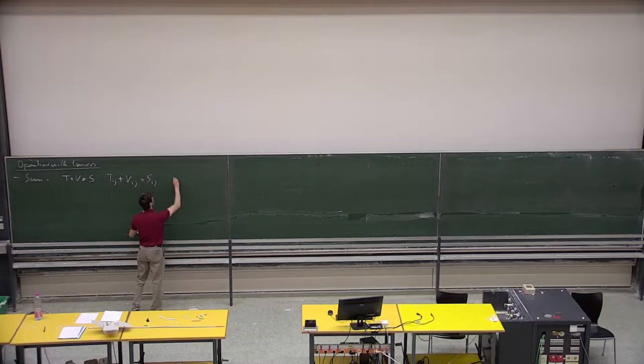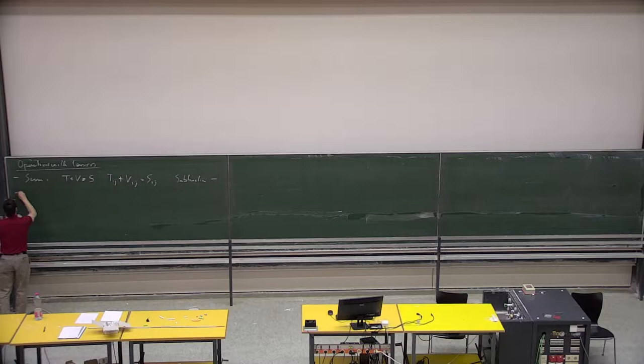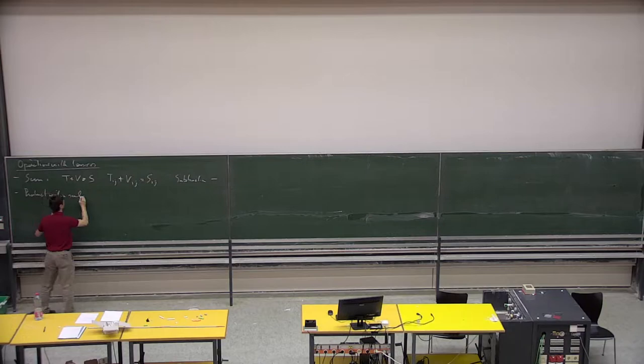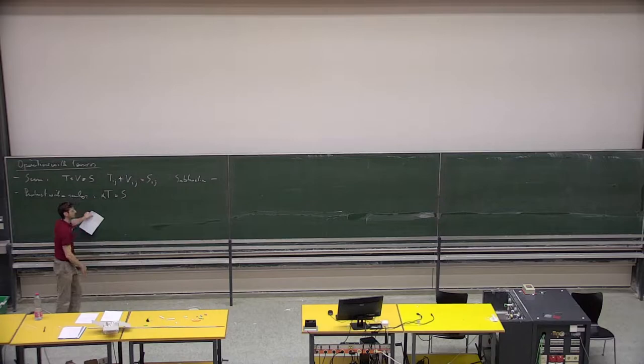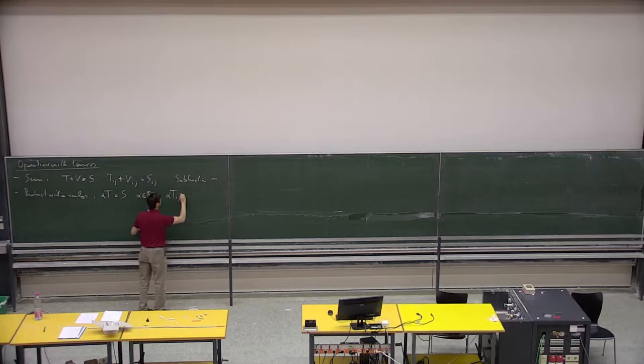Of course, if there is addition there is also subtraction — you just replace plus with minus. Then there is multiplication with a scalar: if you have a tensor, you can multiply it by some scalar number alpha belonging to R, and you get a new tensor of exactly the same rank, whose components are alpha times T_ij, equal to S_ij.